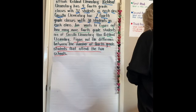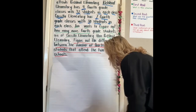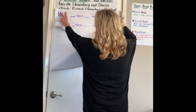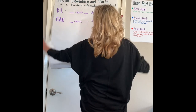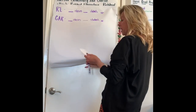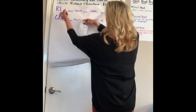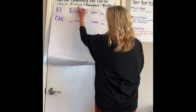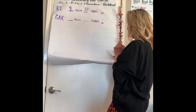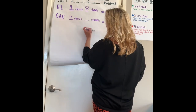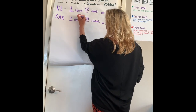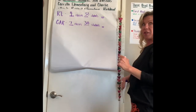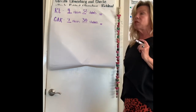Okay, let's go ahead and solve. So boys and girls, we know that Richland Elementary has four classes with 32 students in it. We know that Carrillo Elementary has seven classes with 30 students in each class. So first we need to figure out how many students are in each school.